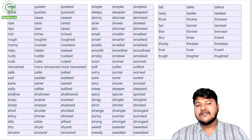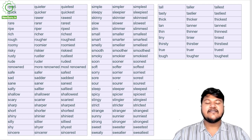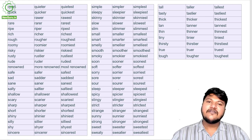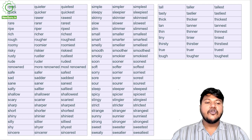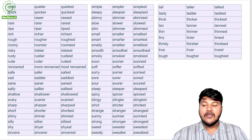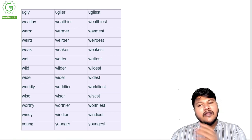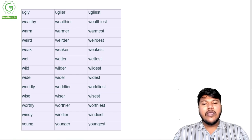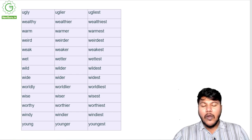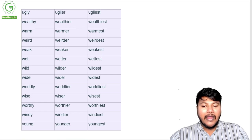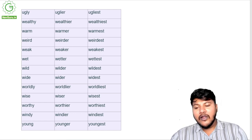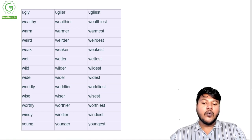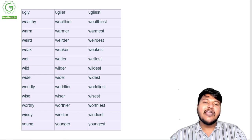Tall, taller, tallest; tasty, tastier, tastiest; thick, thicker, thickest; tan, tanner, tannest; thin, thinner, thinnest; tiny, tinier, tiniest; thirsty, thirstier, thirstiest; true, truer, truest; tough, tougher, toughest; ugly, uglier, ugliest; wealthy, wealthier, wealthiest; warm, warmer, warmest; weird, weirder, weirdest; weak, weaker, weakest; wet, wetter, wettest; wild, wilder, wildest; wide, wider, widest; worldly, worldlier, worldliest; wise, wiser, wisest; worthy, worthier, worthiest; windy, windier, windiest; young, younger, youngest.